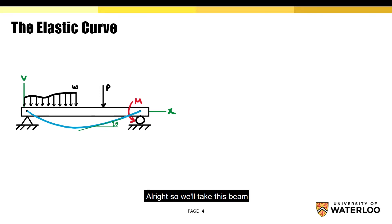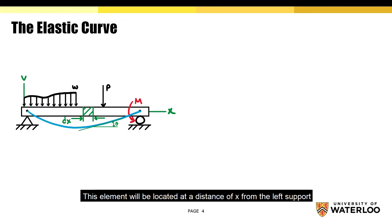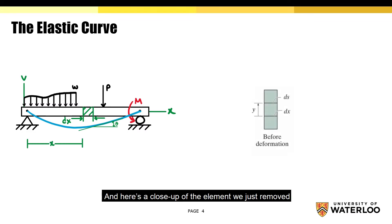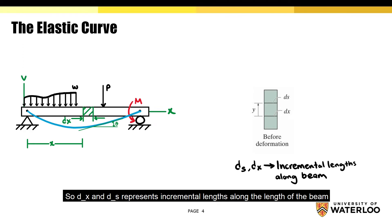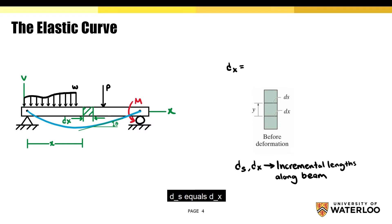Alright, so we'll take this beam and remove a small element. This element will be located at a distance of x from the left support. And here's a close-up of the element we just removed. So dx and ds represent incremental lengths along the length of the beam, and y represents the vertical distance between these two lengths. As you can tell, before the beam is deformed, ds equals dx.